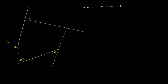We have these exterior angles, and they're each supplementary to some interior angle. So maybe if we can express them as a function of the interior angles, we can write this problem in a way that seems a little bit more doable. So let's write the interior angles. We already got to letter E, so let's call this interior angle F, this one G, this one H, this one I, and this one J.